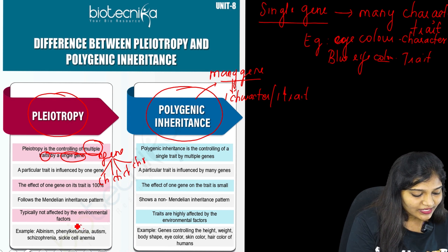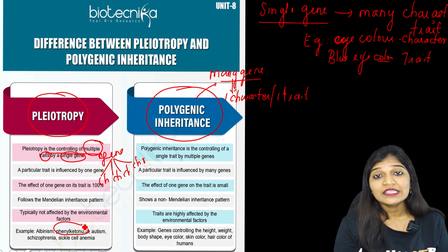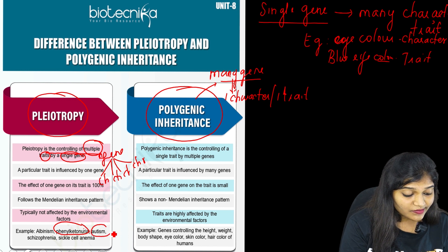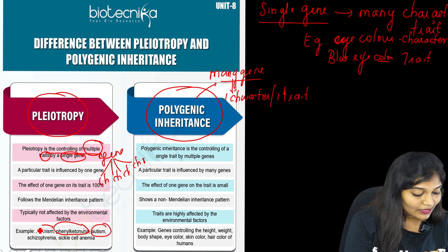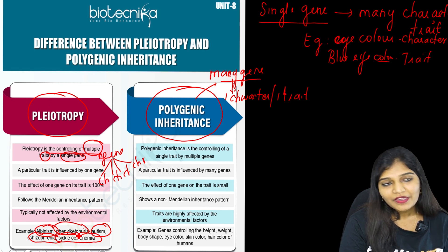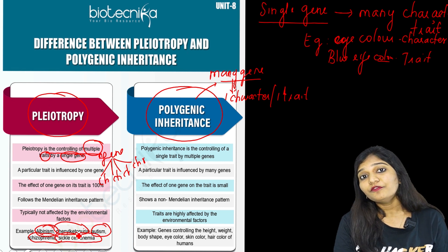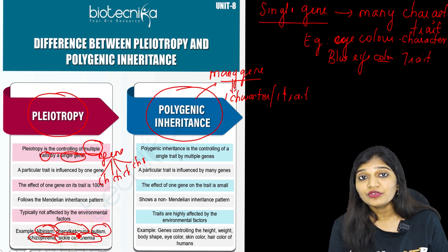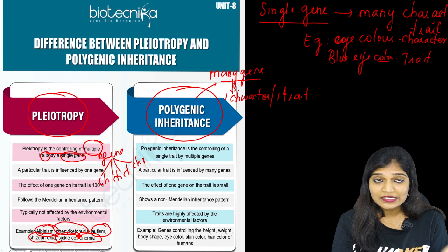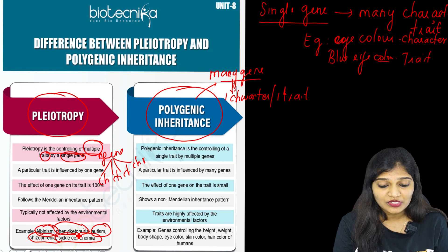Examples of pleiotropy include phenylketonuria, autism, albinism, schizophrenia, and sickle cell anemia. Let's take phenylketonuria as an example to understand all the points about pleiotropy.